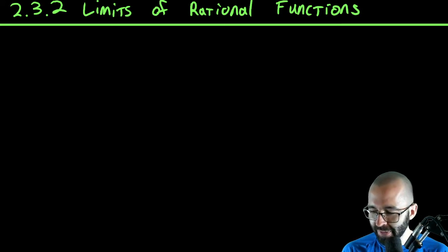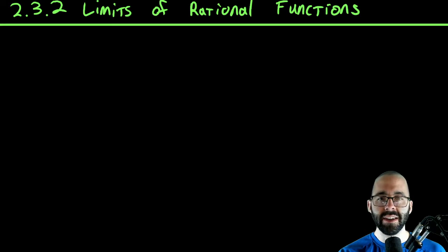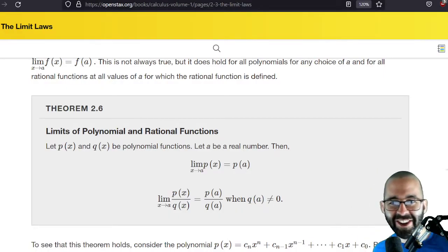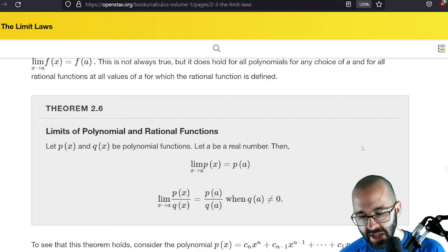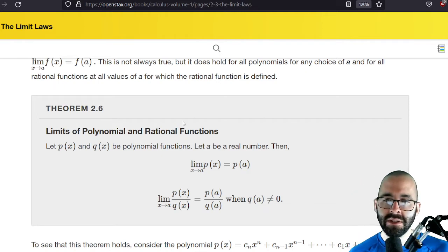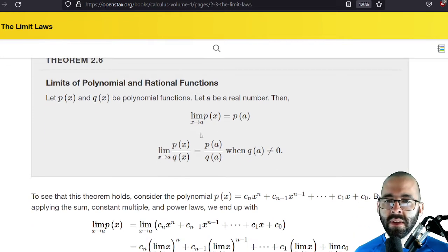Let's stay in 2.3 for now. We're going to start by talking about limits of rational functions, specifically some limit laws for that. We have this theorem in the book, it's known as Theorem 2.6. It says that if we have two polynomial functions p and q and a is some real number, then the limit of a polynomial is just a function value at that point.